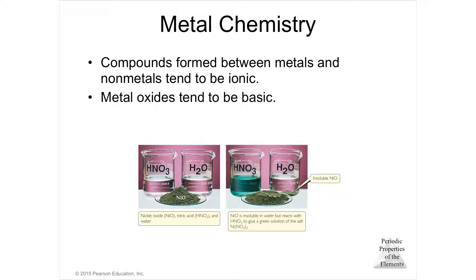Group one elements are called the alkali metals, and group two are the alkaline earth metals, because they tend to turn water basic. The chemistry of metals tends to make bases when dissolved in water.